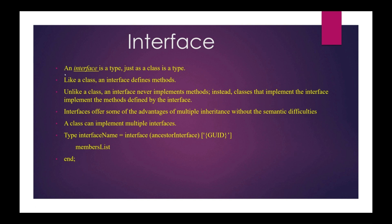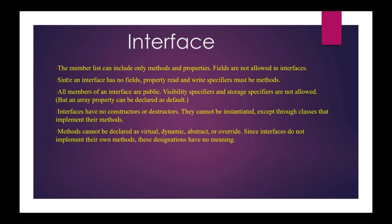All the procedures and functions can be listed here. The interface cannot keep the definition of those methods — once we inherit the interface into a class, we give the definition there. The list can include only methods and properties, because fields are not allowed in the interface. Since the interface has no fields, property read and write specifiers must be methods. All members are of public visibility; storage specifiers are not allowed. Interface has no constructor or destructor because you cannot create an instance of the interface, and the interface has its own mechanism to destroy objects.